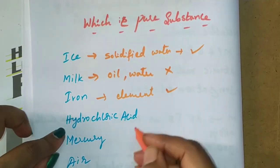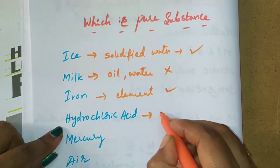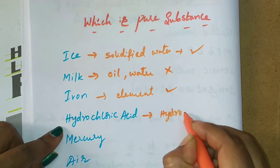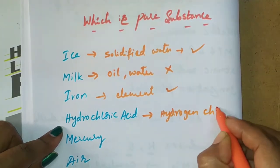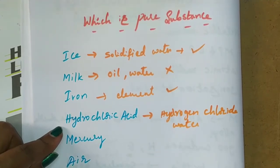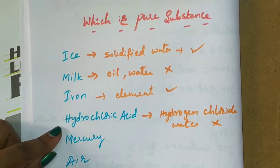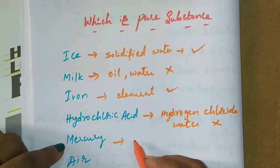it is a pure substance. Hydrochloric acid - it is hydrogen chloride and water, mixture of hydrogen chloride and water, that's why it is not a pure substance. Mercury - it is an